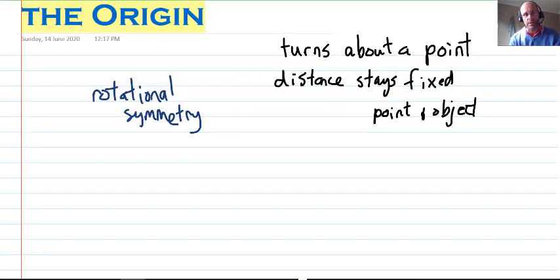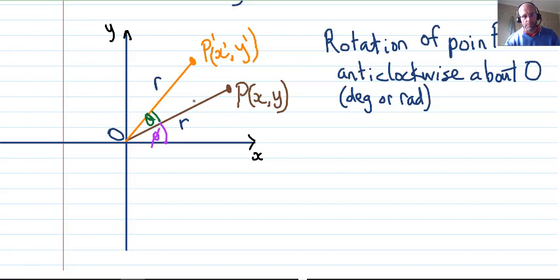Now this forms a part of the study of matrices. We're going to see where this transformation matrix comes from. We've got an axis system with two points. The first point is P, and we're going to rotate point P anticlockwise about O, the origin.